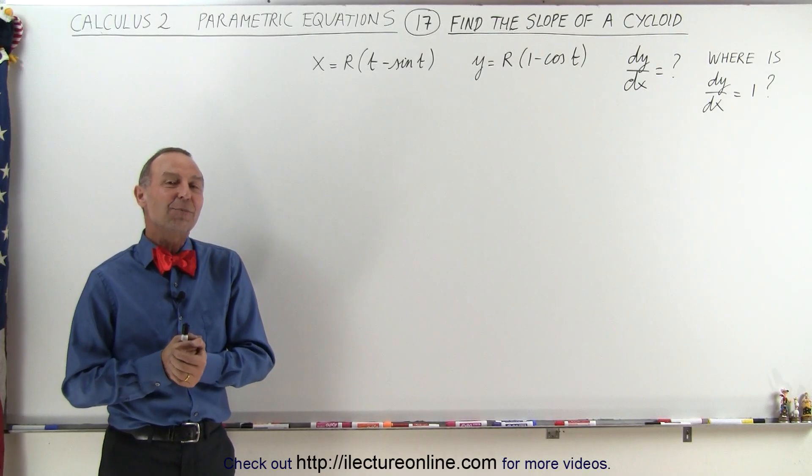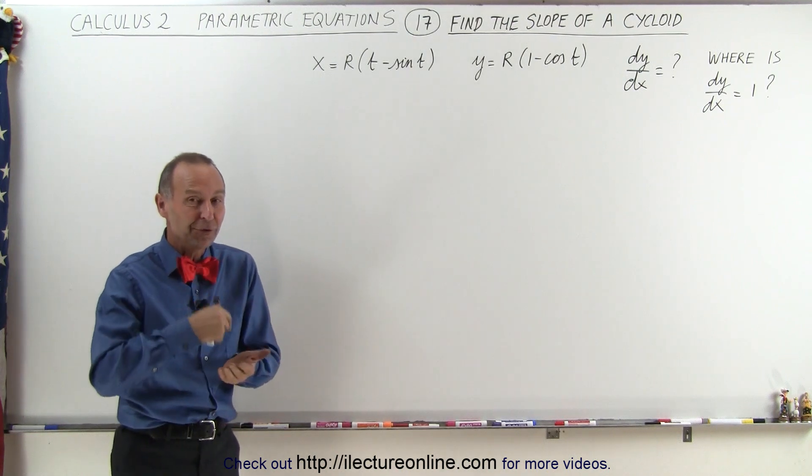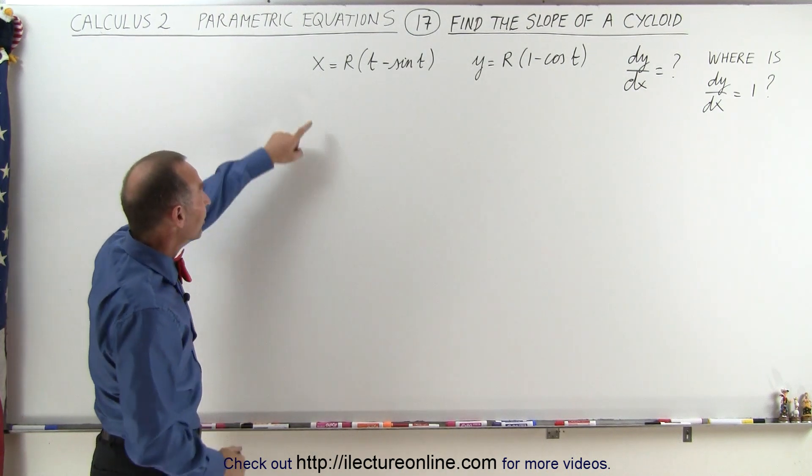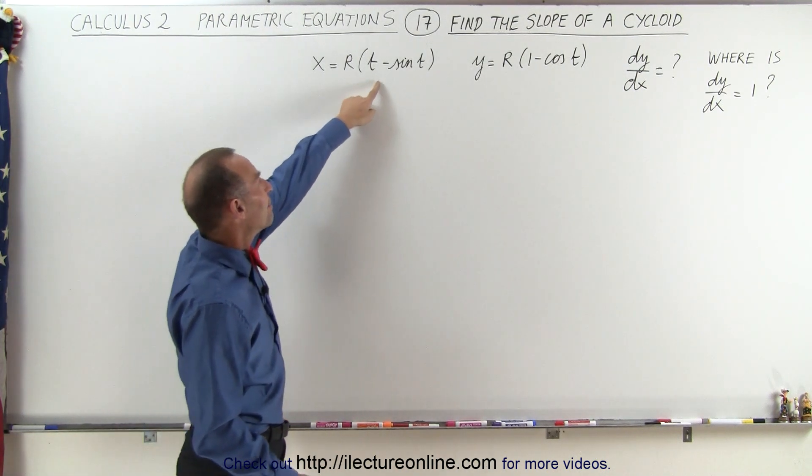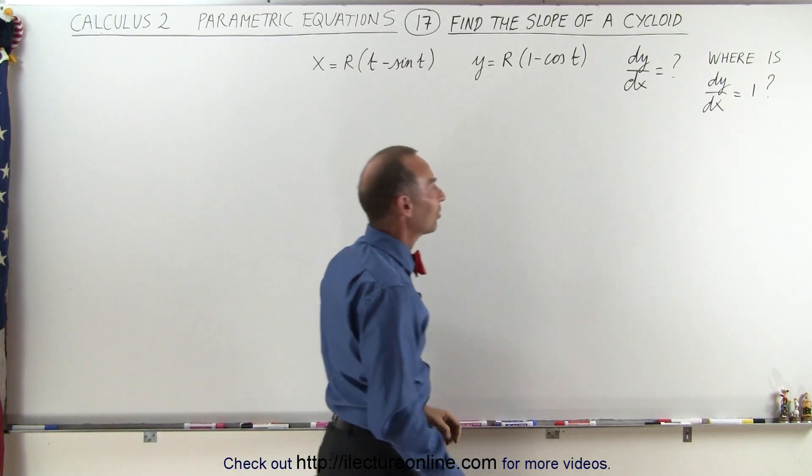Welcome to our lecture online. You may remember the equations relative to the cycloid that we discussed a few videos back, and here they are: x equals r times t minus the sine of t, and y equals r times 1 minus the cosine of t.